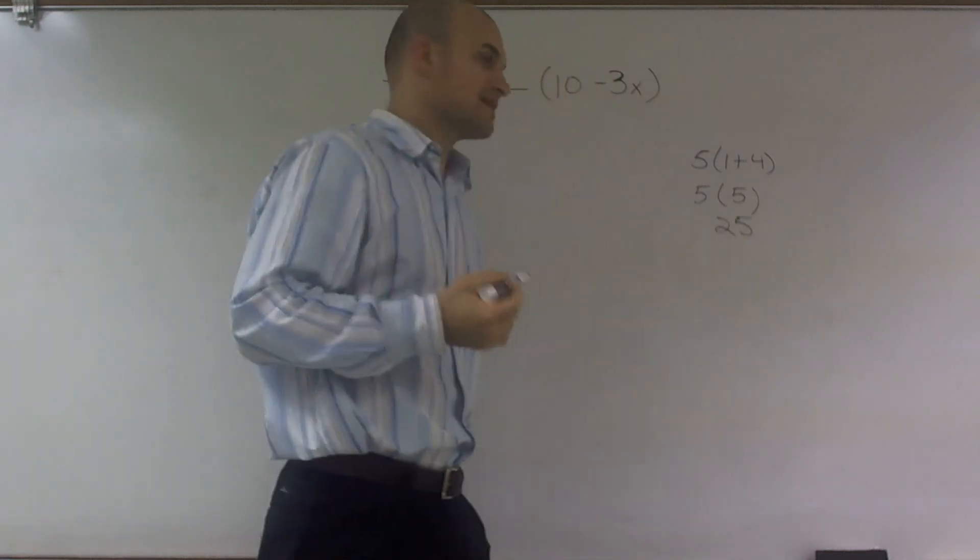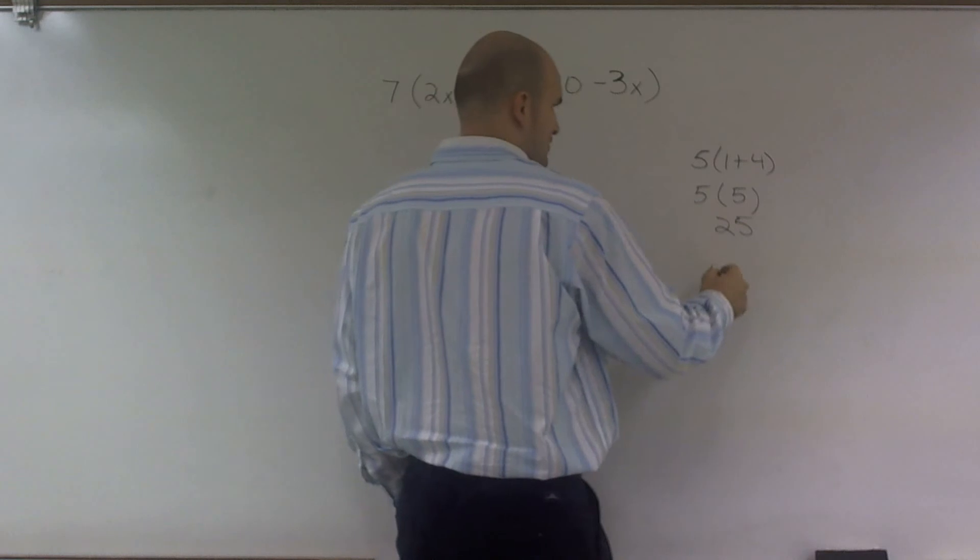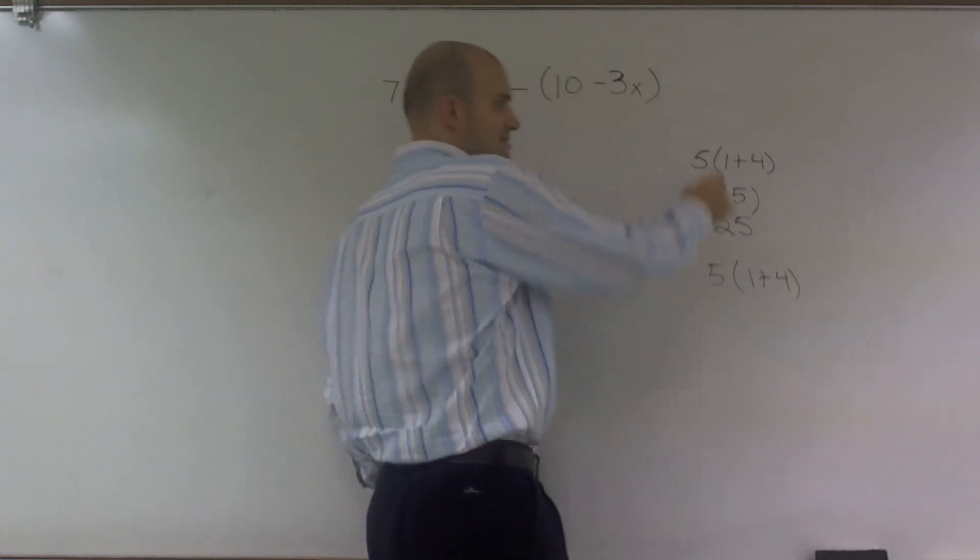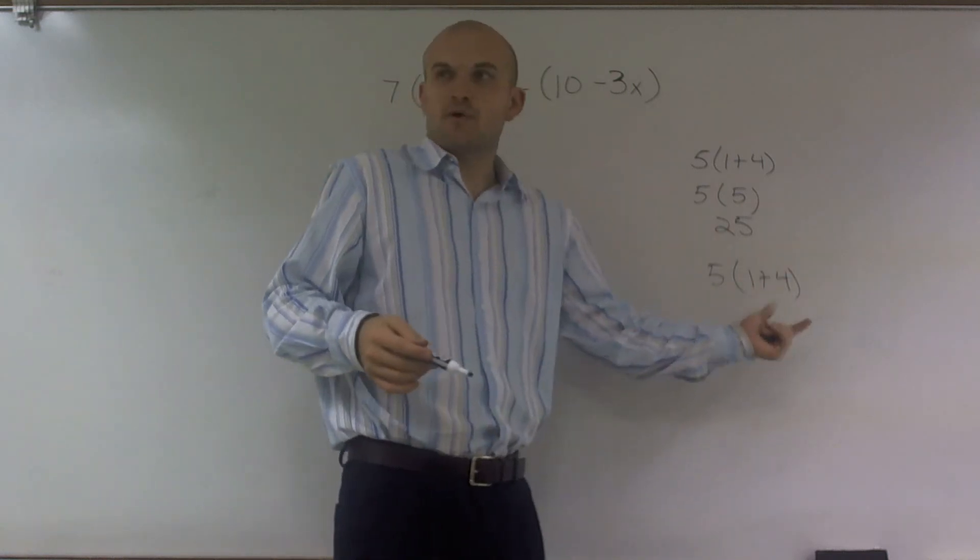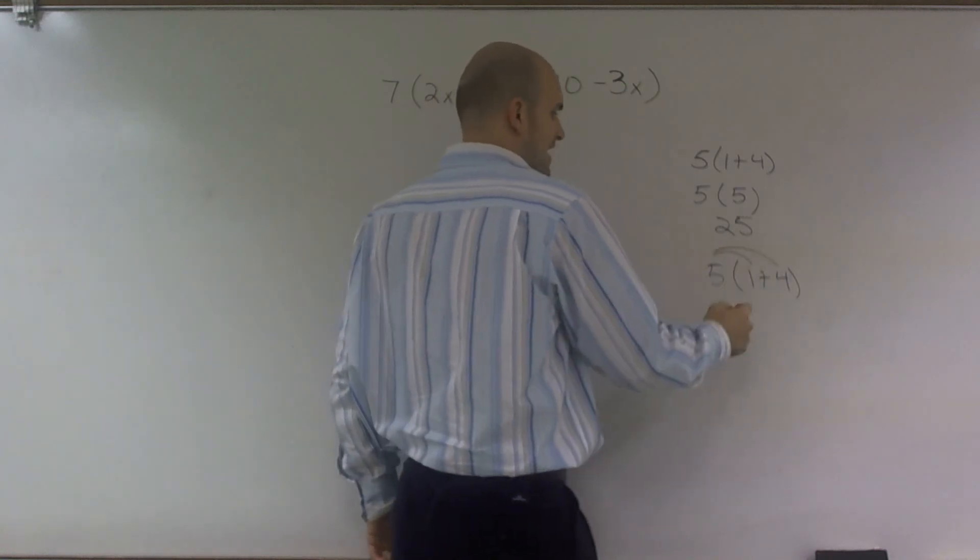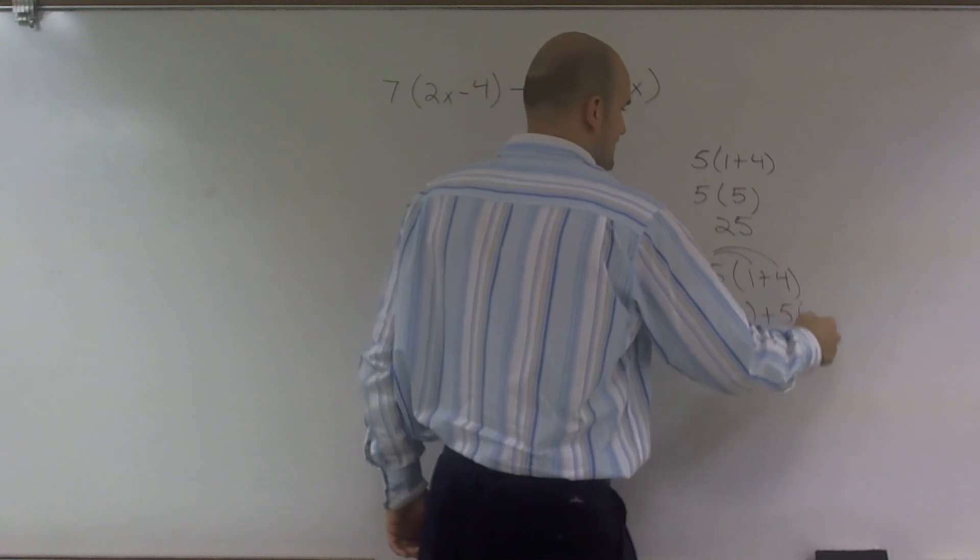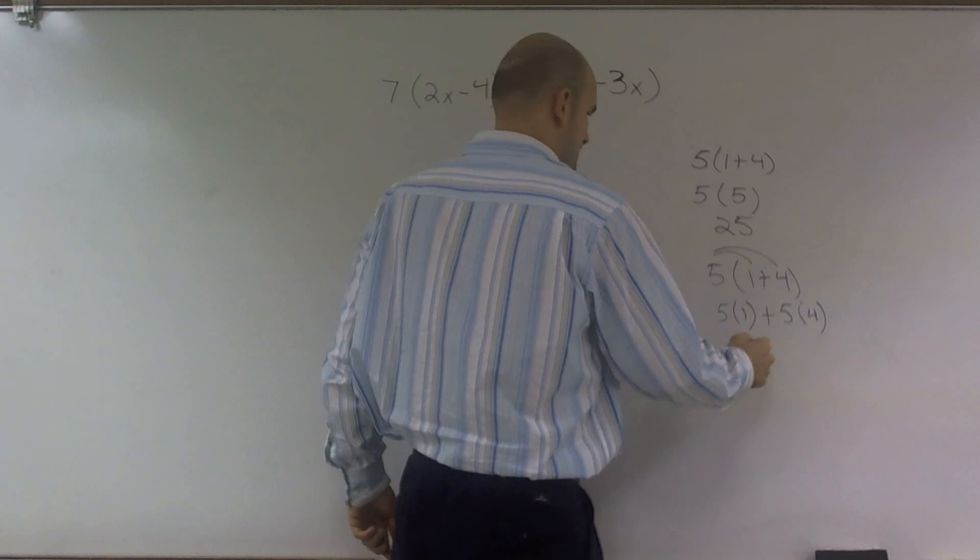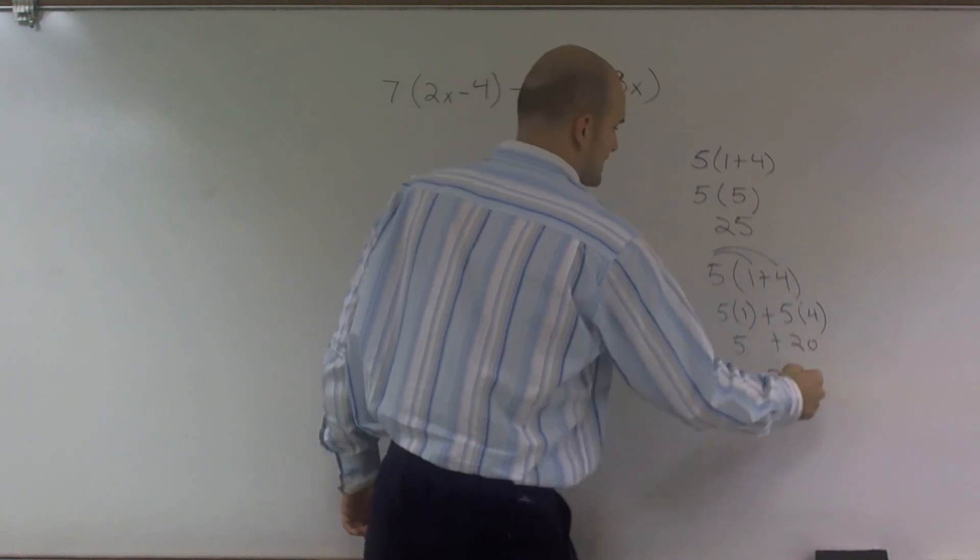What distributive property says is you can also rewrite this. Rather than evaluating 1 plus 4 first, you could multiply the 5 times 1 and then add it to the 5 times 4. So 5 times 1 is 5, plus 5 times 4 is 20, which again gives us 25.